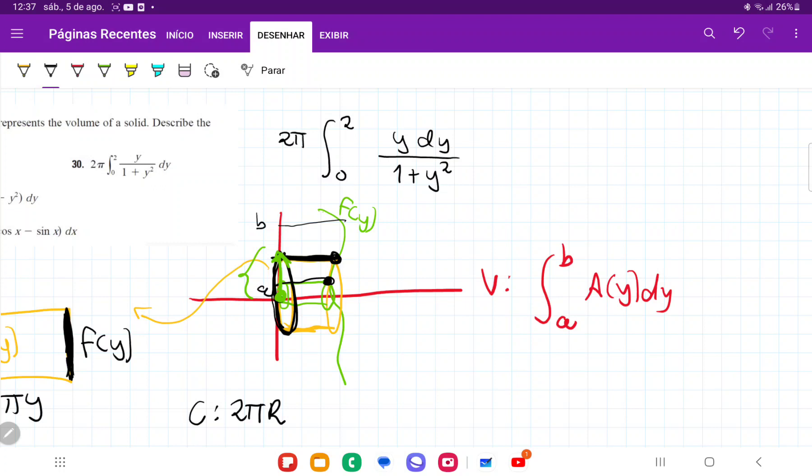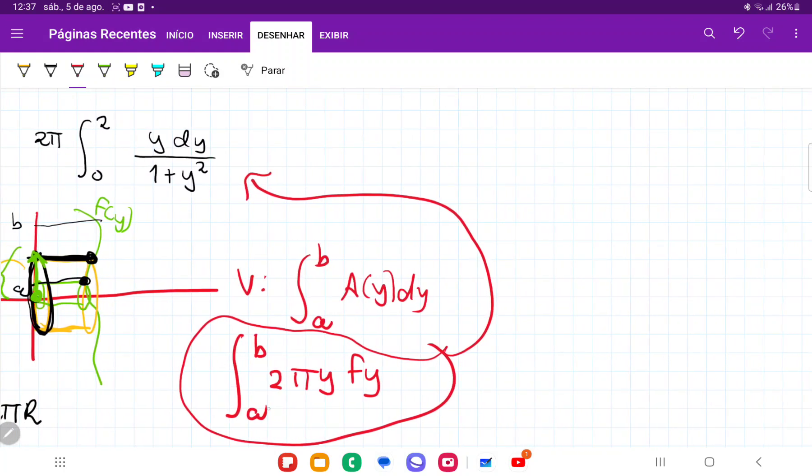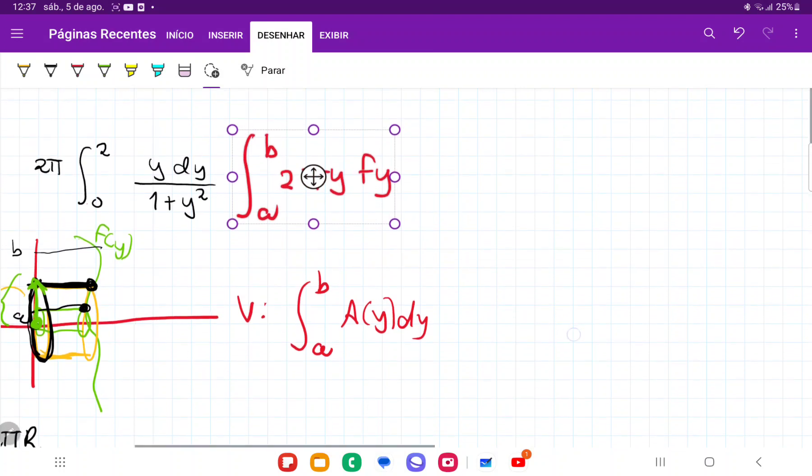Therefore, this volume is going to be described by the integral from a to b of 2πy f(y) dy. And so let me just improve this a little bit. Let's compare now this guy to this guy right there. We can see that the boundaries a to b corresponds to 0 to 2. Actually, let me put these side by side. We're just going to compare them.